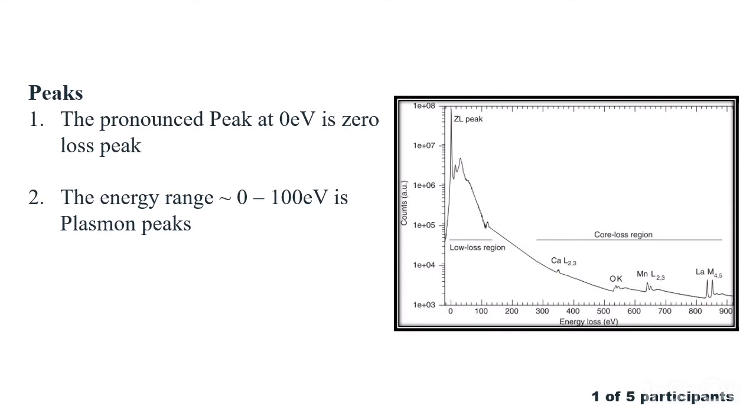The region above hundred electron volt energy loss is generally called the core loss region. This core excitation is caused by the excitation of an atomic core state of an atom in the sample to an unoccupied higher lying state of the crystal or even to a free electron state. The core energy loss region provides information about elemental composition, concentration, and bonding in the valence shells.